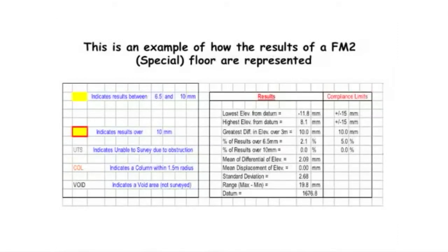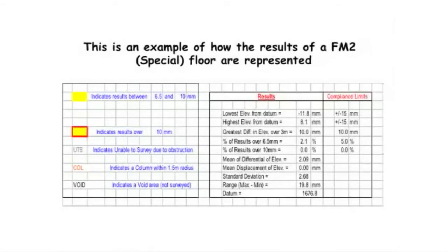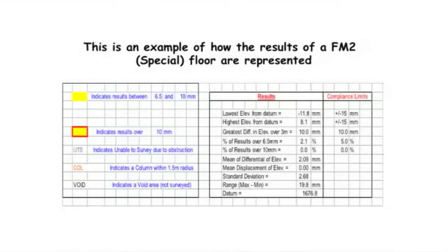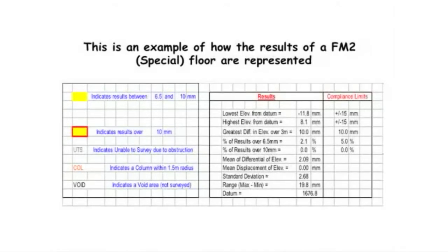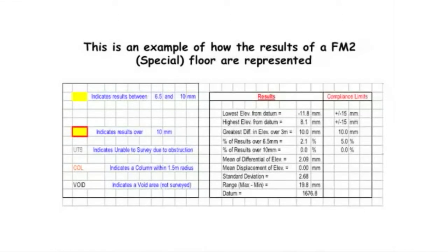Be aware you can't survey near columns because levels tend to go wrong there — the building contractor put those levels in. We found dock levelers over 2.8 meters, and a 48 millimeter difference in elevation between two points when someone was trying to achieve a FM2 Special floor. Coordination is a real issue.